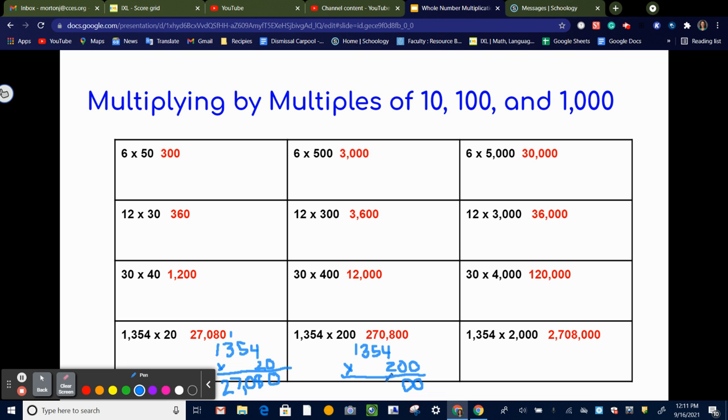And then I'm going to multiply my non-zero numbers. So again, I'm going to get the same thing. And just put your comma in the correct place.